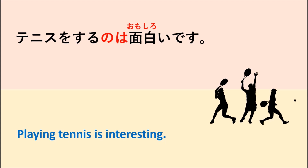Let's look at an example together. We have the sentence: テニスをするのは面白いです, which means 'Playing tennis is interesting.' You can see there are two parts to this sentence. The first part is テニスをする, which means 'I play tennis,' and 面白い, which means 'interesting.' When you want to put these two small sentences together and make 'playing tennis' the topic, you use NOWA to connect them.